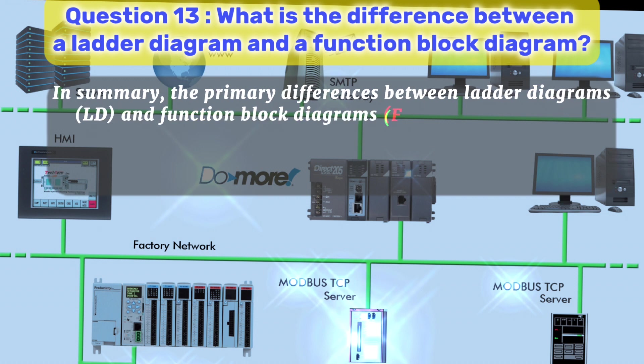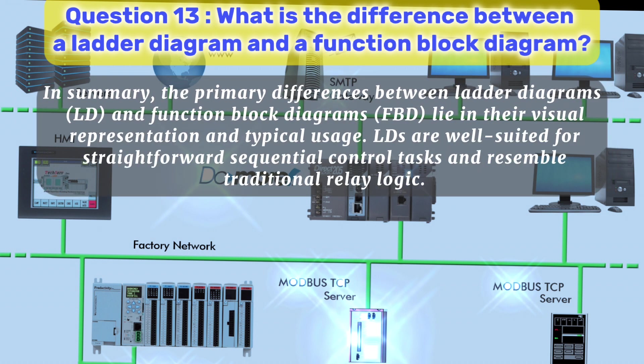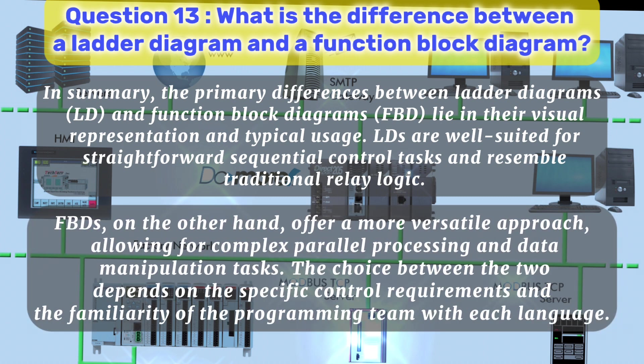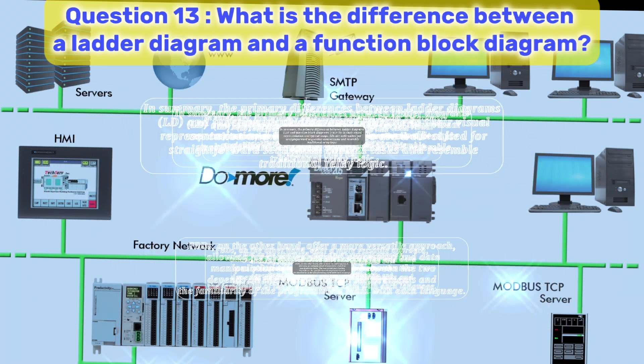In summary, the primary differences between ladder diagrams, LD, and function block diagrams, FBD, lie in their visual representation and typical usage. LDs are well-suited for straightforward sequential control tasks and resemble traditional relay logic. FBDs, on the other hand, offer a more versatile approach, allowing for complex parallel processing and data manipulation tasks. The choice between the two depends on the specific control requirements and the familiarity of the programming team with each language.